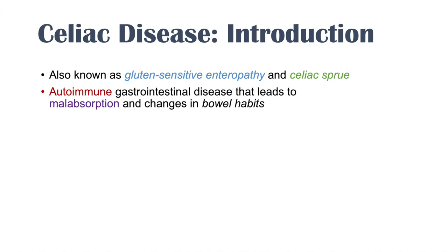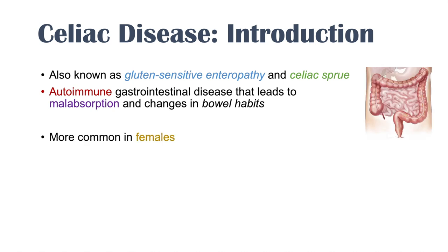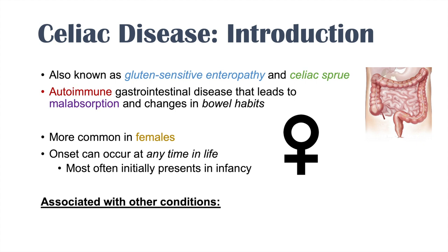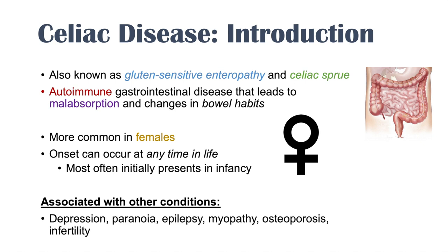It's an autoimmune gastrointestinal disease that leads to malabsorption and changes in bowel habits. This condition is more common in females, as are many autoimmune conditions. Onset can occur at any time in life but generally occurs earlier, even as early as infancy. Celiac disease is associated with other conditions including depression, paranoia, epilepsy, myopathy, osteoporosis, and infertility — many of which are due to the malabsorptive effects of celiac disease and decreased quality of life.